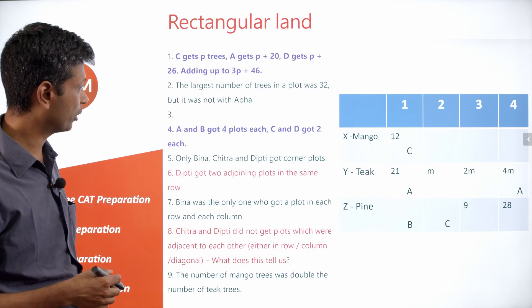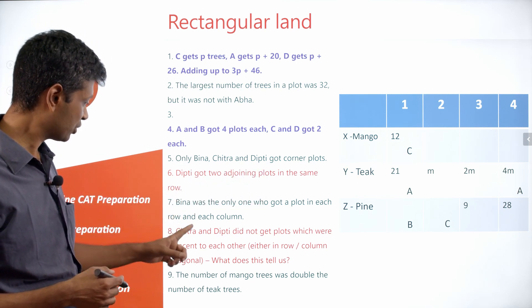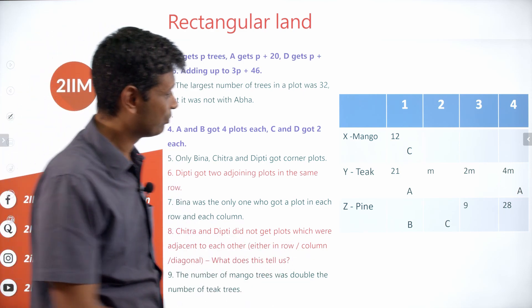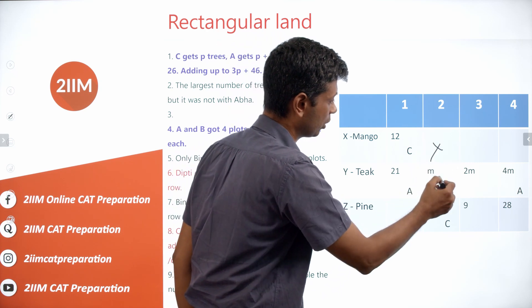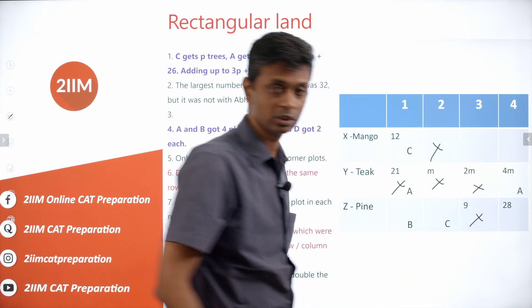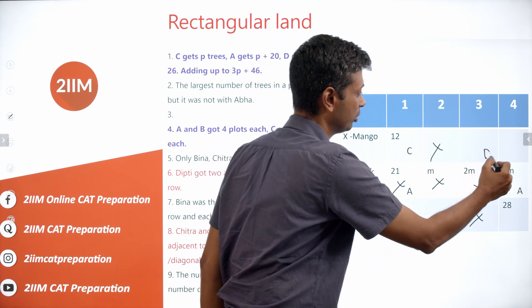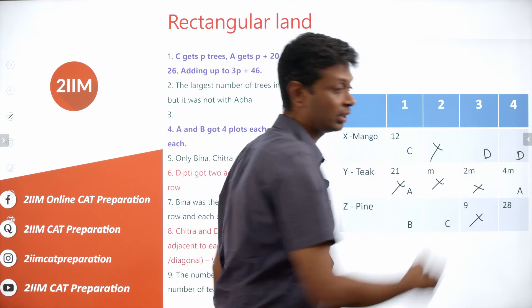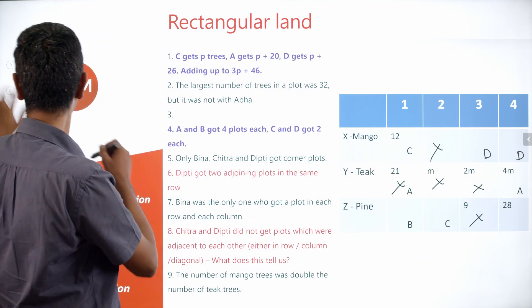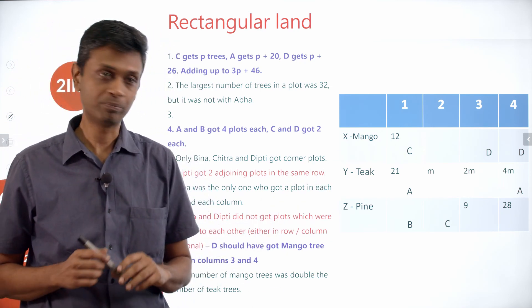Now using adjacency constraints: Deepti got two adjoining plots in the same row, and Chitra and Deepti cannot be adjacent in row, column, or diagonal. If Chitra occupies a corner, the three plots adjacent to it are eliminated for Deepti. Working through both Chitra corners, Deepti's two adjacent plots can be placed uniquely and straightforwardly.